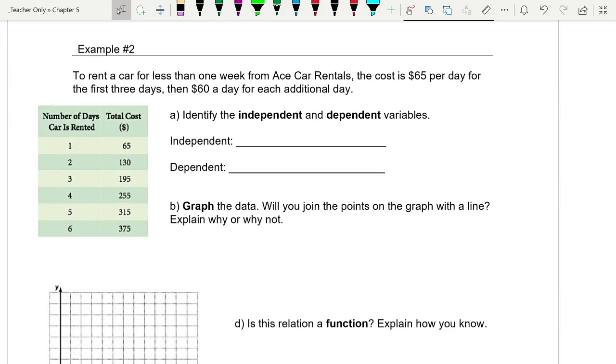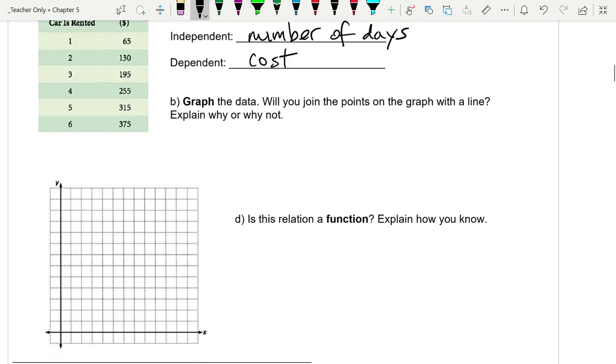Okay, so example two. To rent a car for less than one week from Ace Car Rentals, the cost is $65 per day for the first three days, then $60 for each additional day. So first of all, which variable is which? Independent is the X, which is number of days. Dependent is the Y, which is the cost.